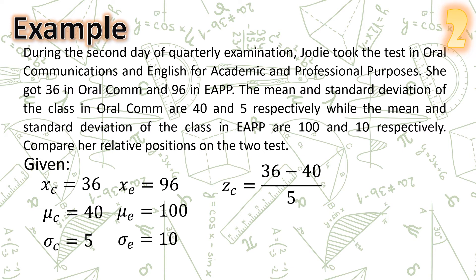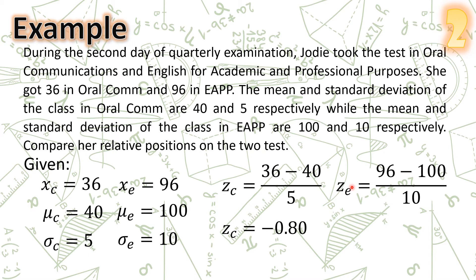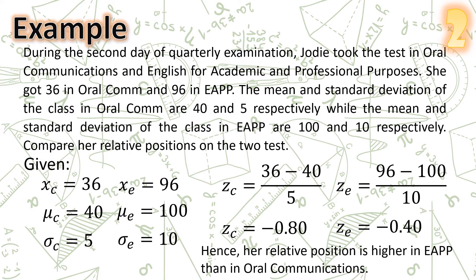Solving for Jody's z-score in oral communication: z = (36 − 40) / 5 = −4 / 5 = −0.8. Solving for Jody's z-score in EAPP: z = (96 − 100) / 10 = −4 / 10 = −0.4. Since −0.4 is higher than −0.8, the relative position is higher in EAPP than in oral communications.